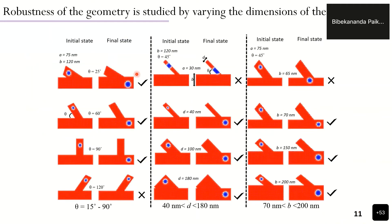To demonstrate robustness of the geometry, the nanostructure dimensions were varied. The angle between the upper and lower branch was varied, showing the device structure is feasible from 15 to 19 degrees of slanted angle. The width of the upper and lower channels was also varied, and the device was found to be feasible for operation of reconfigurable OR and AND logic over a wide range of structural dimensions.